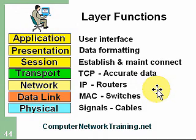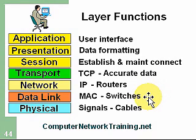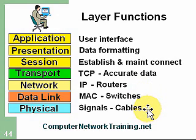The data link layer is where the physical MAC address is added, and this is what our switches use to switch data on a local area network. We keep adding information down through the layers until we reach our physical layer, where we convert the information into a signal — it might be voltage levels on a cable, pulses of light in fiber optics, or frequency information if it's wireless.